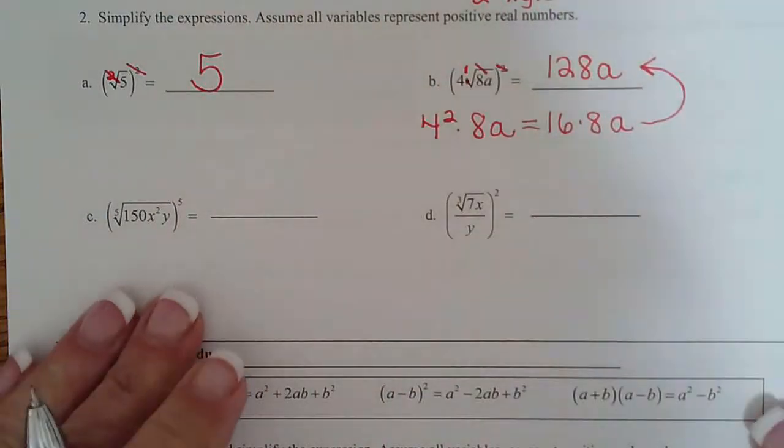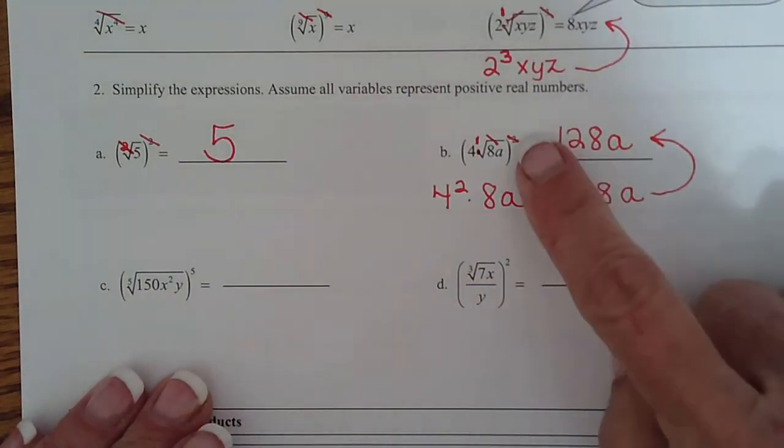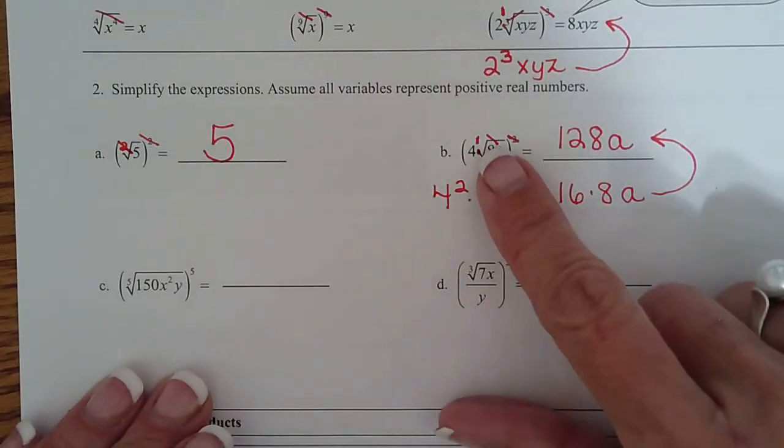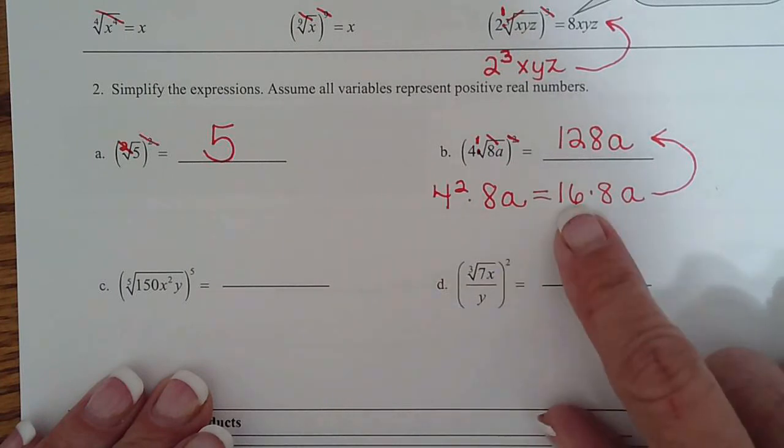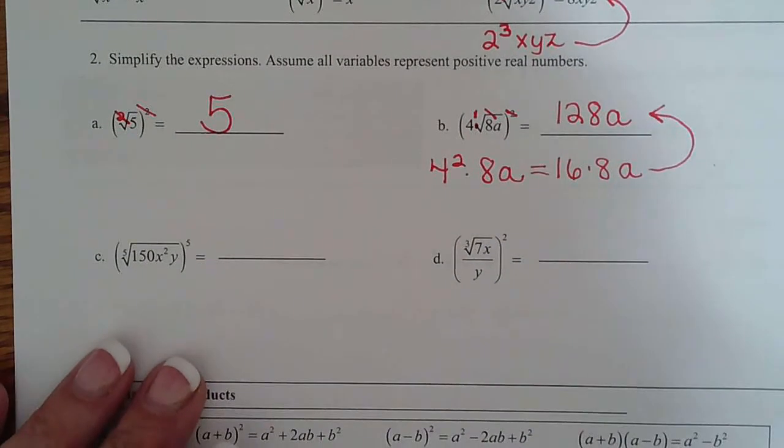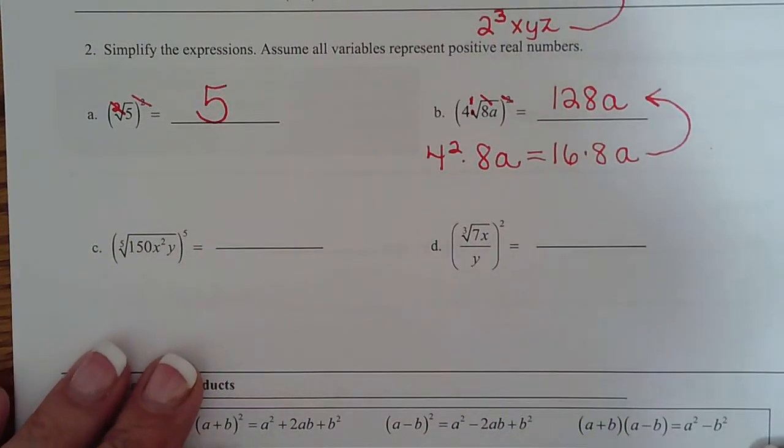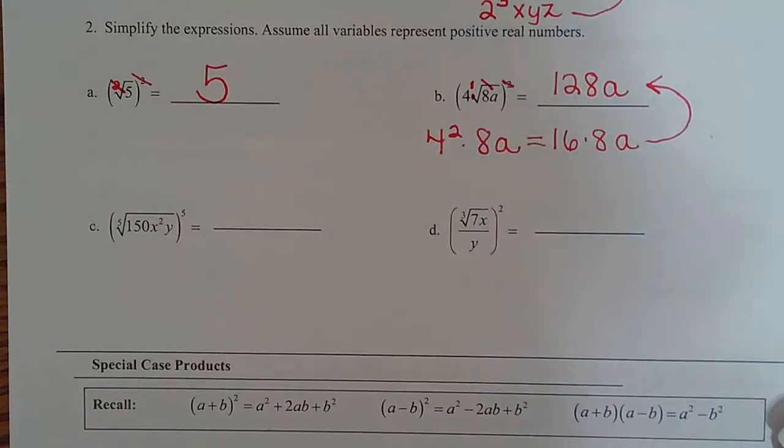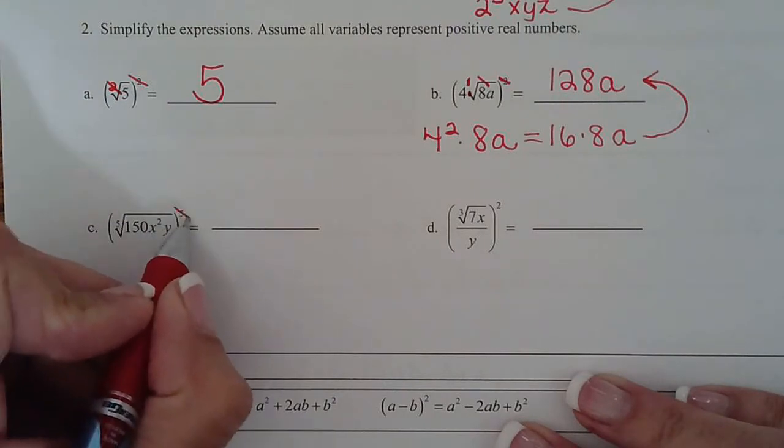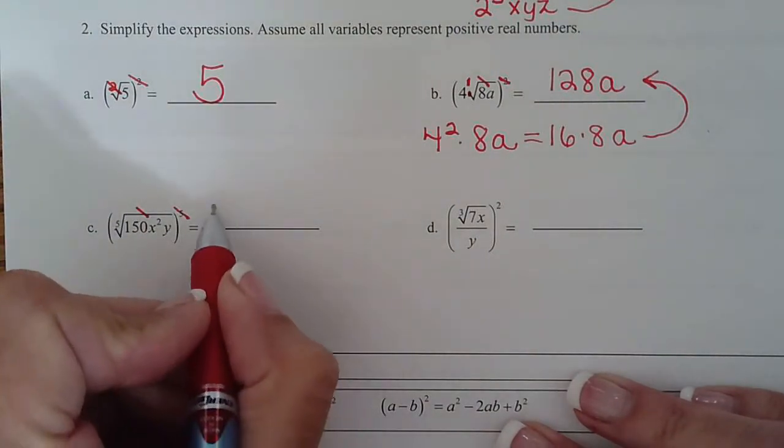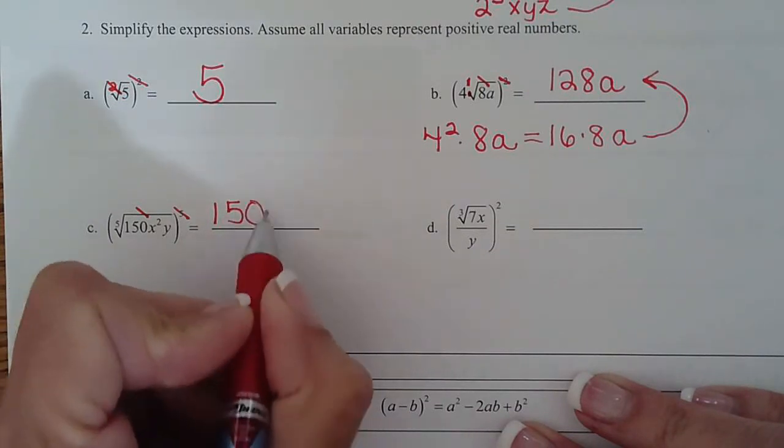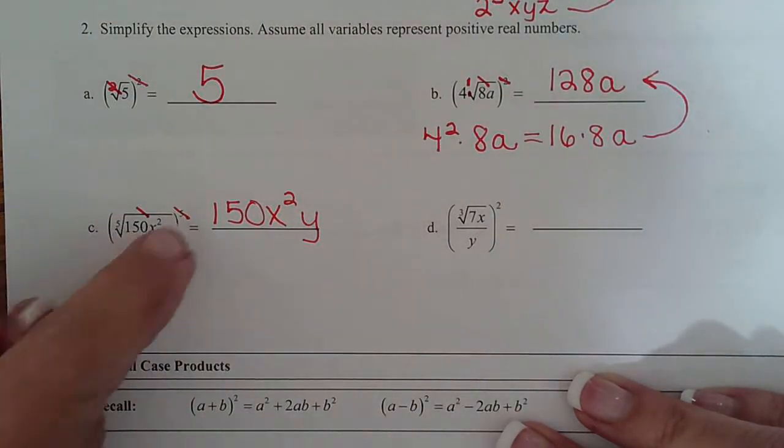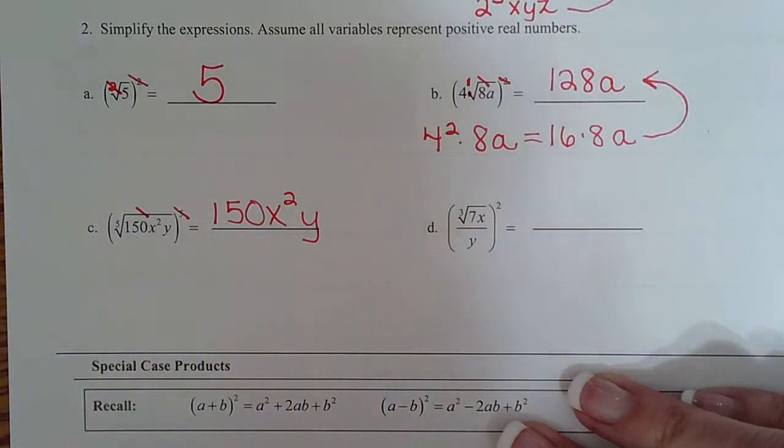Where's the calculator when I need it? 16 times 8. I need you guys here to help me. Should have went with the gut. That gives me 128a. Just like the third example above, we distributed that exponent. The 2 goes with the 4 and then the 2 cancels with the radical. So we get 4 to the second times whatever's under the radical. 4 to the second, 16 times 8a, 128a.